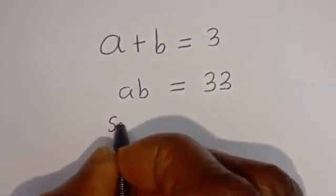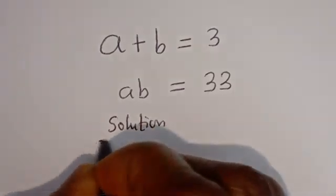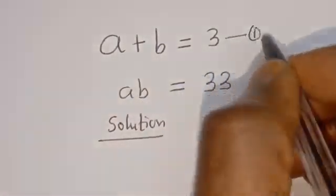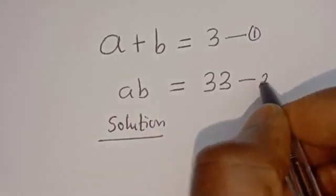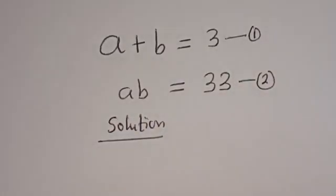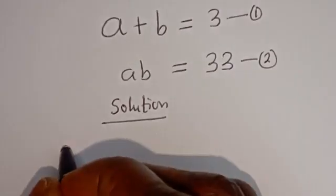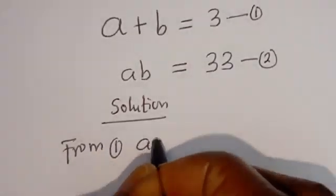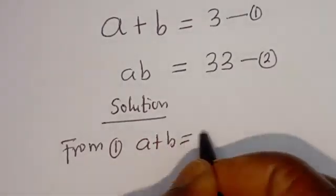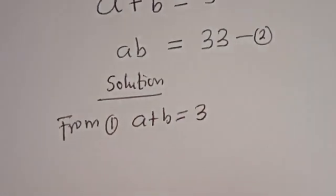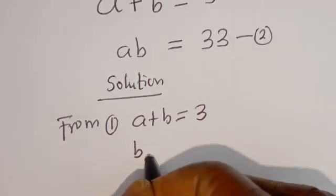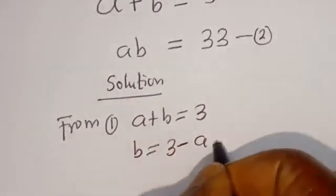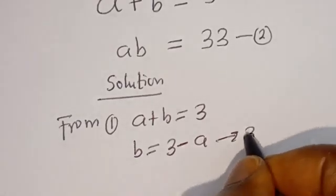Solution. A plus B is equal to 3 — let's call this equation 1. A times B is equal to 33 — let's call this equation 2. Then from equation 1, A plus B is equal to 3, so B is equal to 3 minus A. Let's call this equation 3.